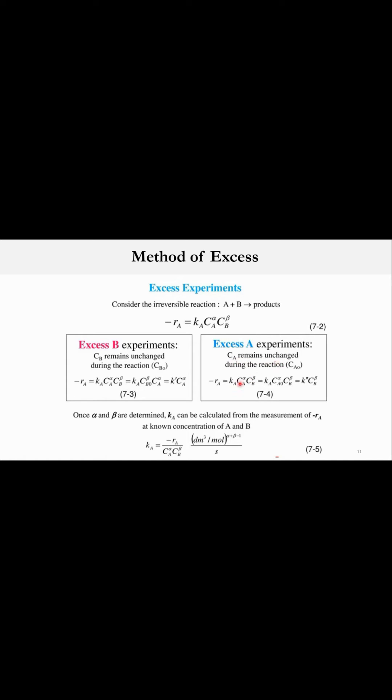In the excess A experiment, C_A remains unchanged, so minus R equals K_A times C_A raised to power alpha times C_B raised to power beta. Since C_A remains unchanged, it equals C_A0, and K_A times C_A0 becomes K double prime. This gives a pseudo first order system from which we can determine the value of beta and K double prime.